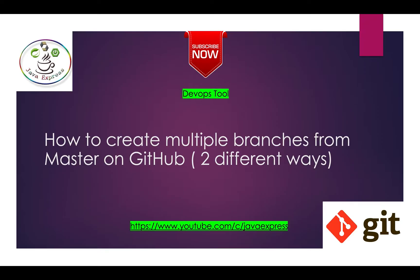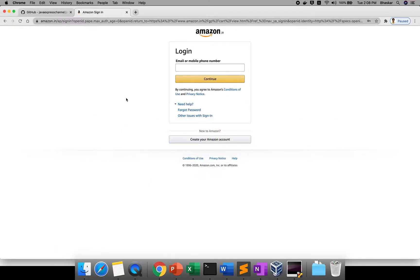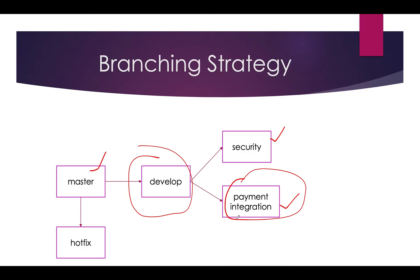So here is our master branch. On top of the master, if you want to develop any new feature — for example, Amazon wants to add 'Sign in with Google' — a developer will create a new develop branch on top of master. All developers use this develop branch. On top of develop, a developer creates a security branch for login, and another creates a payment integration branch.